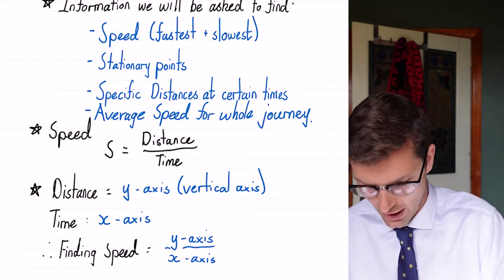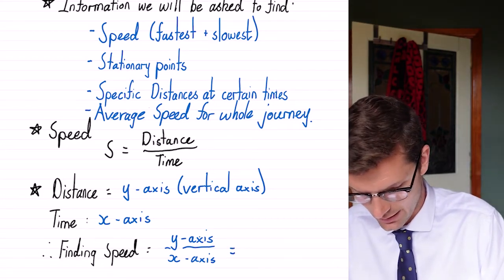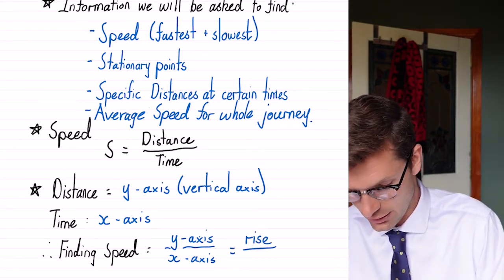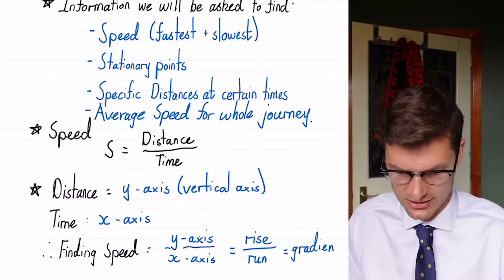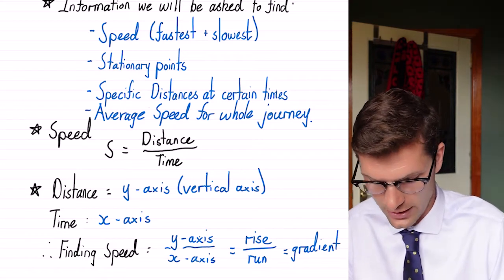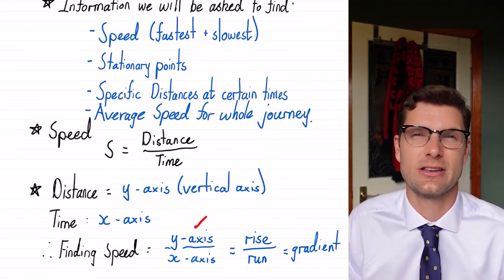Another way to think about this is rise over run, which is equal to the gradient if you've done linear relationships. But if you haven't, don't stress at all. As long as you can read off the graph these two, you're going to be totally fine.